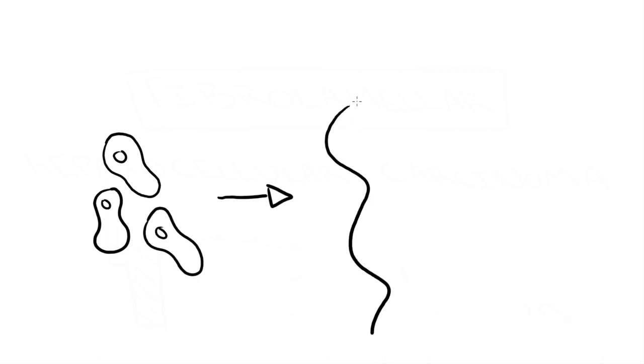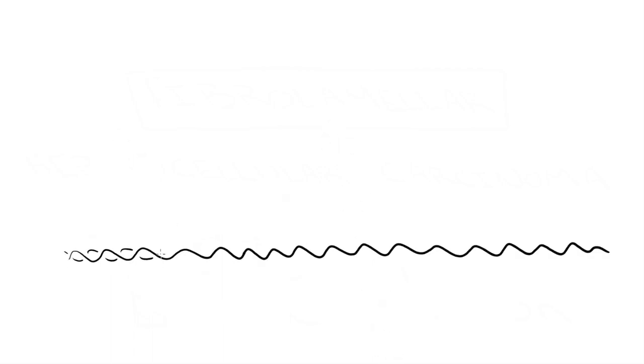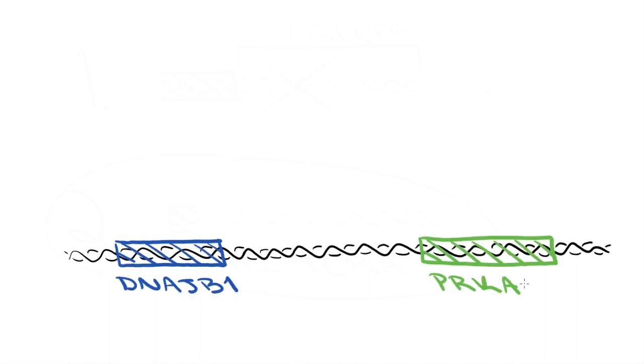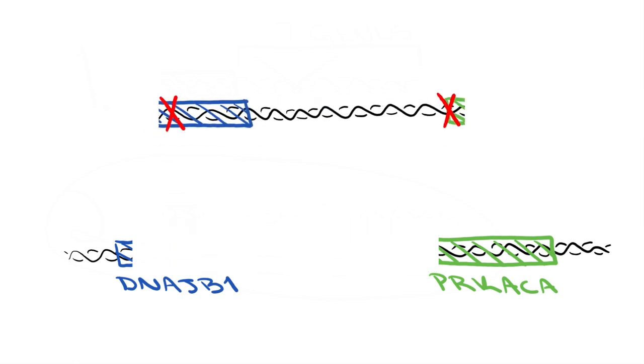These researchers previously showed that all patients found so far with fibrolamellar have the same mutation in their tumor cells. A small piece of DNA is missing. The piece that's missing is between two genes, DNAJB1 and PRKACA.